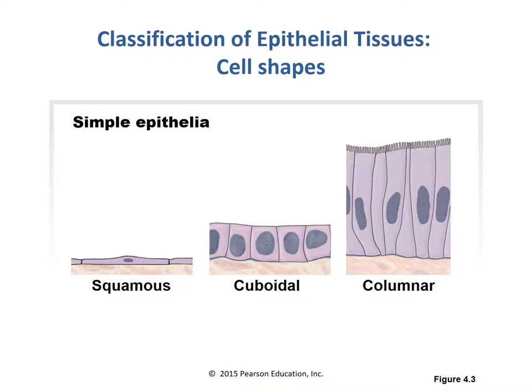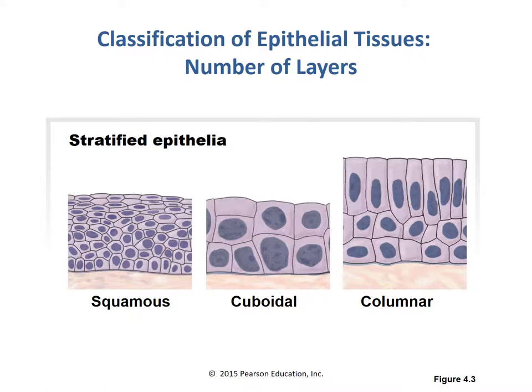Continuing our look at epithelial cells, we are looking at their classification. There are two major factors: layering and shape. There are three shapes of epithelial cells: squamous, which is a flattened or fried-egg shape; cuboidal, which is a square or cube shape with a large centrally located nucleus; and columnar, which is longer than it is wide and often contains cellular projections like microvilli or cilia. Layering comes in either simple — one layer — or stratified, meaning multiple layers. When identifying the shape, we always look toward the apical surface.